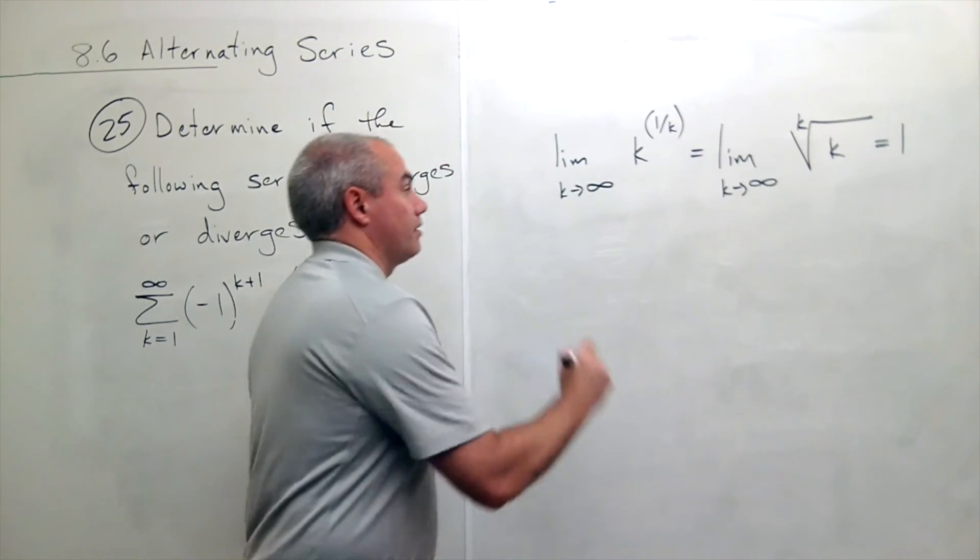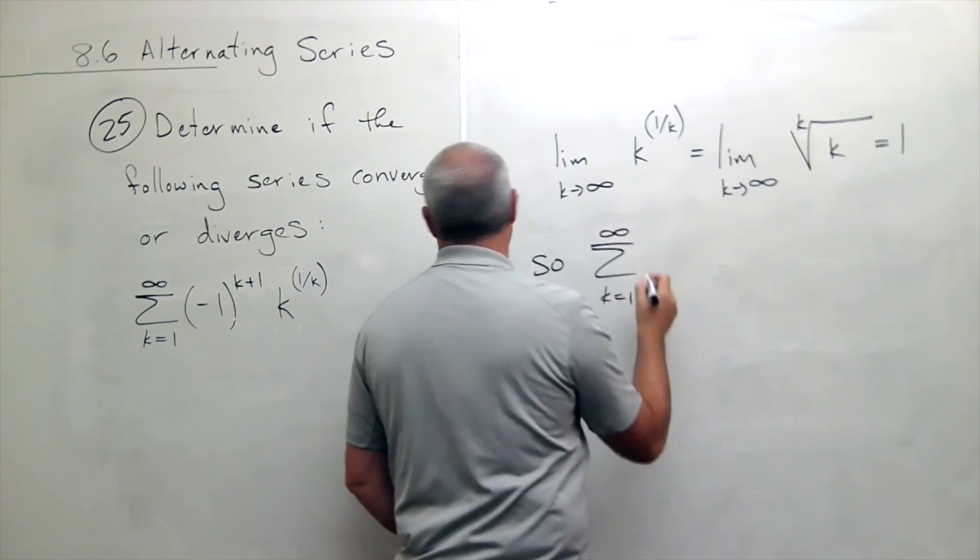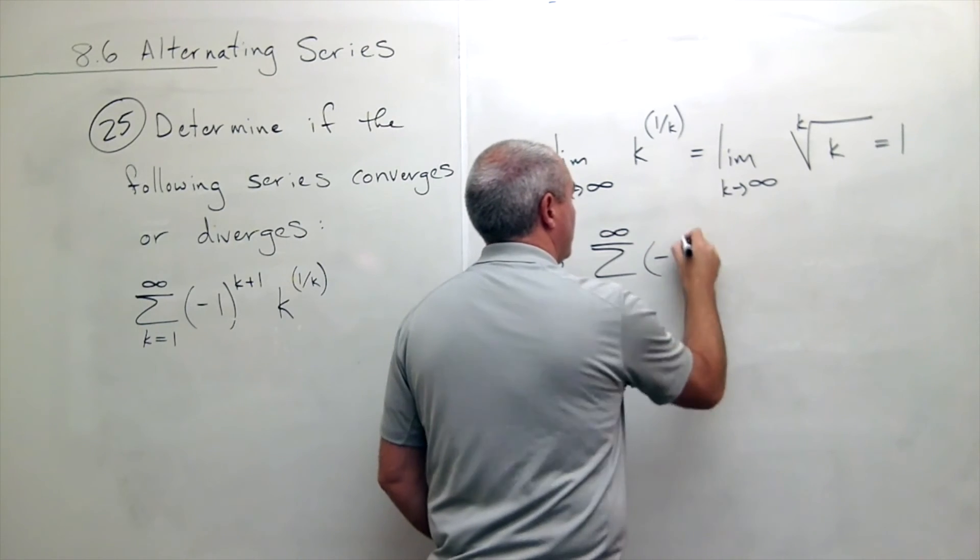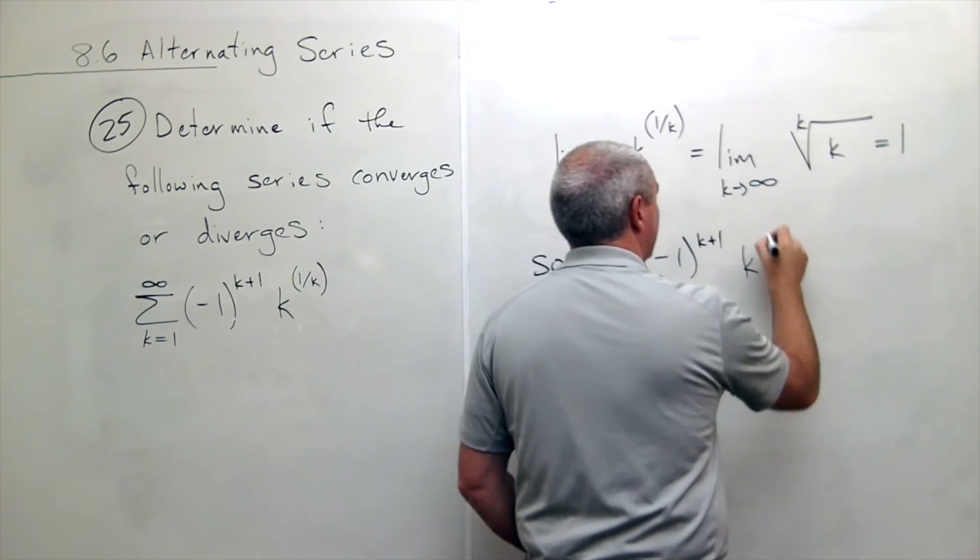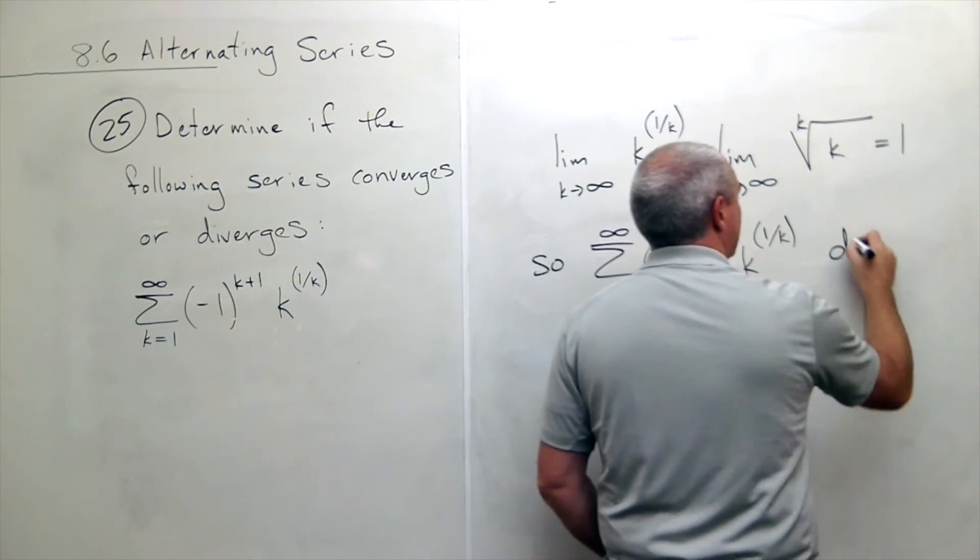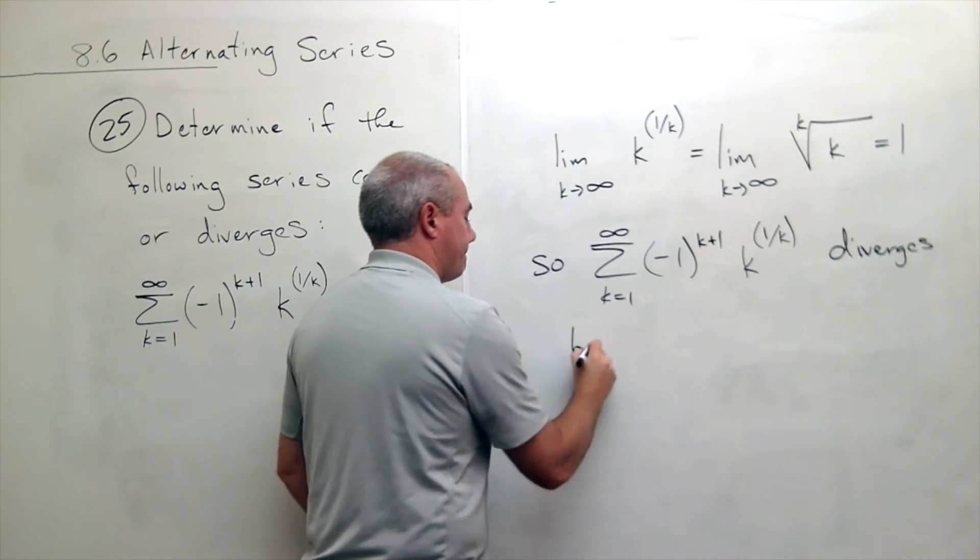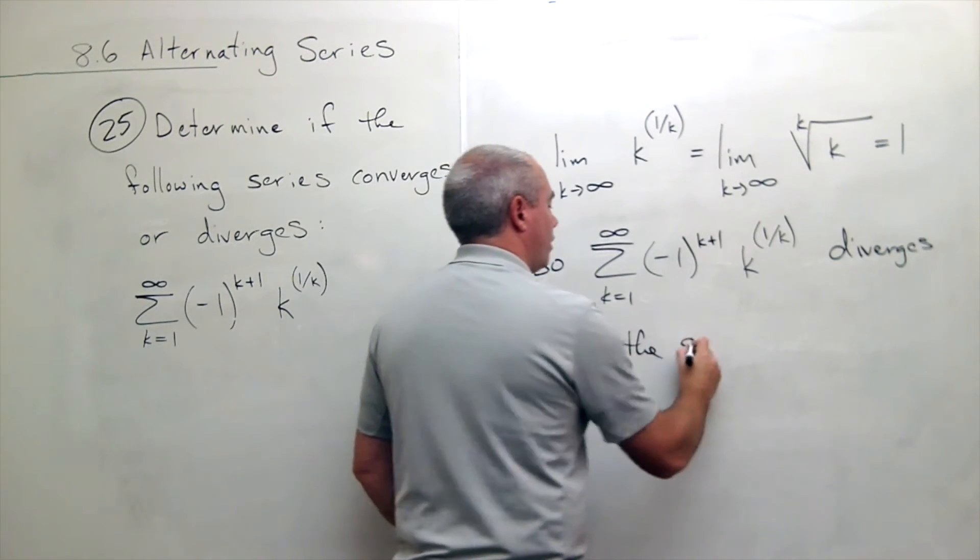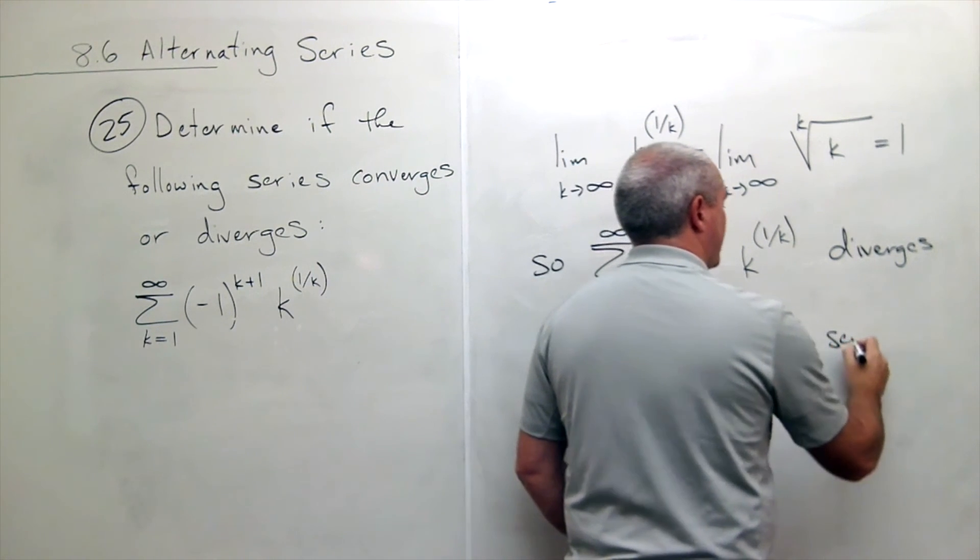So I can say, so the sum k going from 1 to infinity of negative 1 to the k plus 1 times k to the 1 over k diverges by the alternating series test.